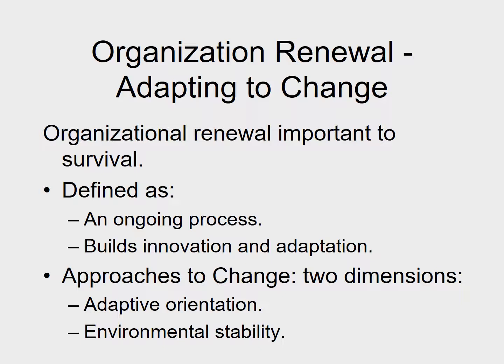The second dimension is environmental stability — what is the organization currently existing in as far as how stable that environment is? When talking about environment, we're mainly talking about inputs: are their supply chains stable, their workforce stable, their output stable, their competition and market share stable? Are customers still wanting and valuing their products, and are legal and cultural expectations also stable? Looking at these two components gives us a model that lets us determine where the organization currently stands.